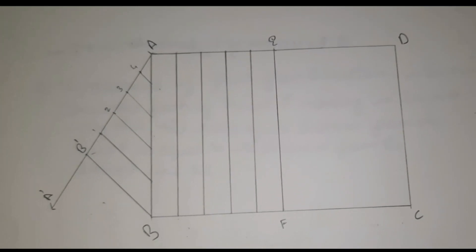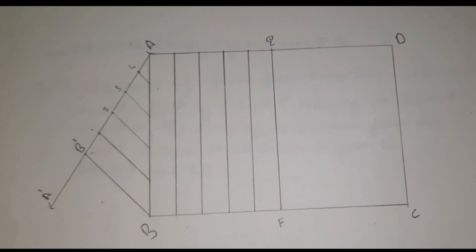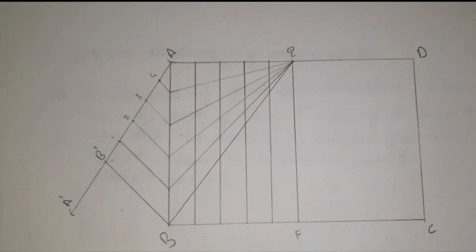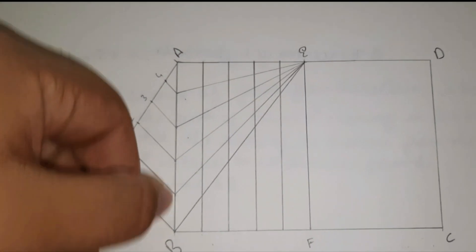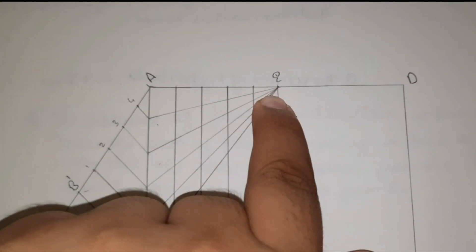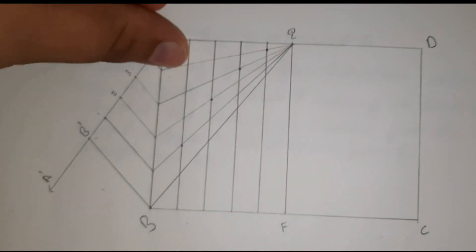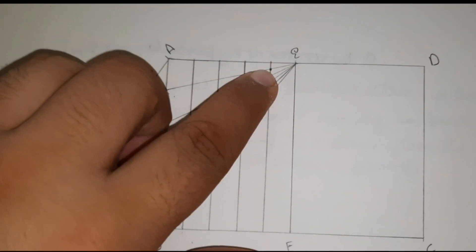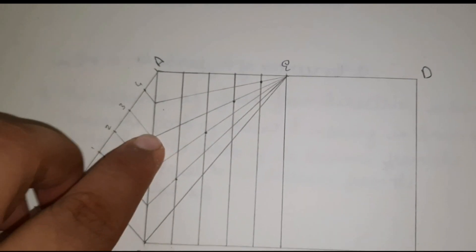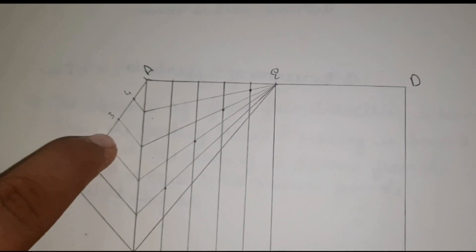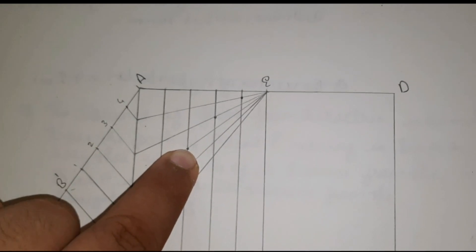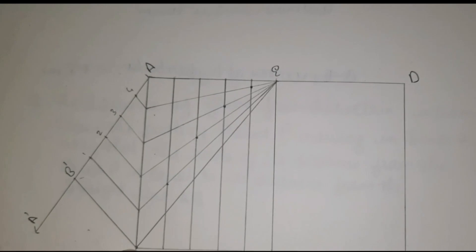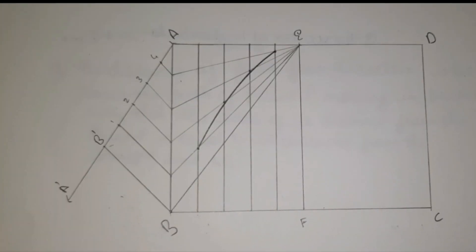Draw lines parallel to BB' from points 1, 2, 3, and 4 — this divides line AB into 5 equal parts. Then join all 5 points to point E. Here we get the points to make a half parabola: the 4th line touching the 1st line is the 1st point, 3rd line touching the 2nd line is the 2nd point, 2nd line touching the 3rd line is the 3rd point, and 1st line touching the 4th point is the 4th point.